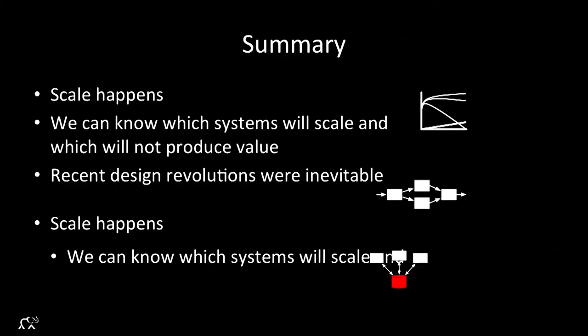Scale happens — it's non-negotiable. We know which systems will scale and which ones will not based on simple arguments. Recent design revolutions — new ways of processing data, new ways of streaming — were inevitable. They were not a choice that we made, an invention we had. This was a forced choice. Scale happens and we can solve the problems that we have.